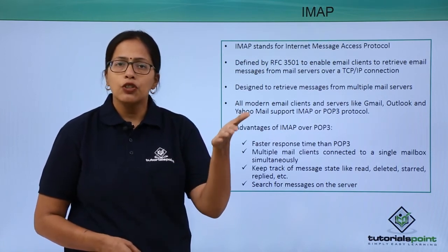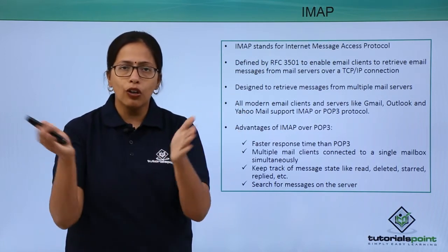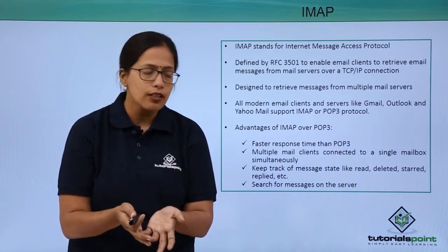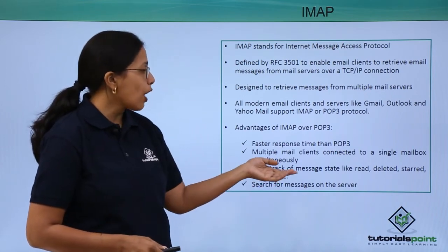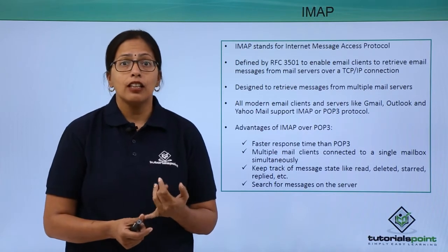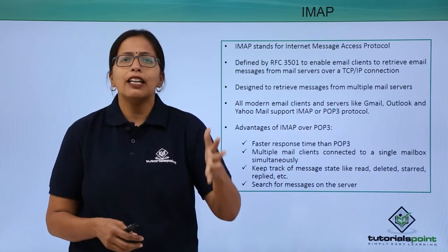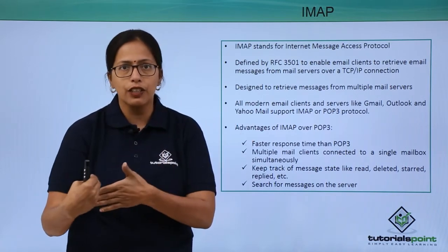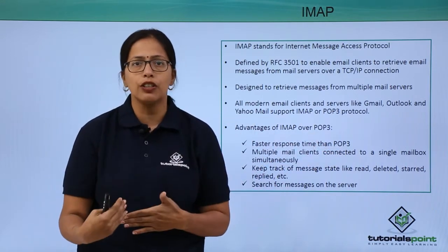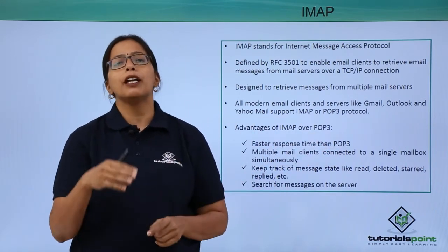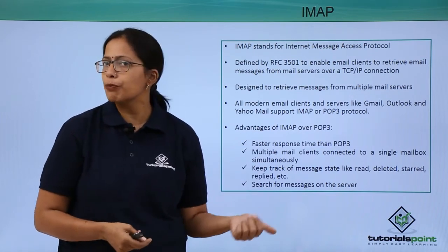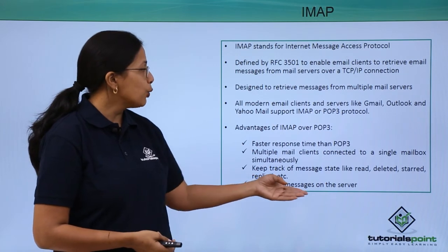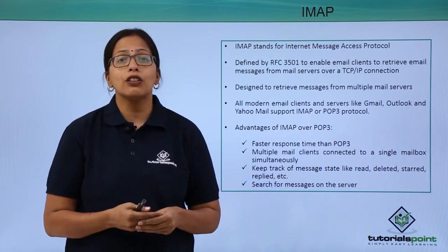For example, Gmail, Yahoo, and Outlook will all come into my own inbox on my own system. IMAP also keeps track of message status — you can get a notification when a mail is delivered or when it has been read. This is possible using the IMAP protocol; if you are using POP3, you cannot do these things. And last but not least, you can search for messages on the server.